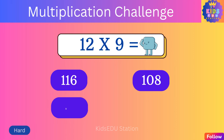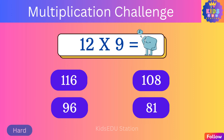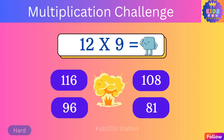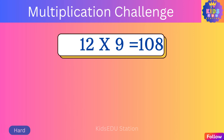One hundred sixteen, one hundred eight, two hundred eight, ninety-six, eighty-one. Twelve times nine is one hundred eight.